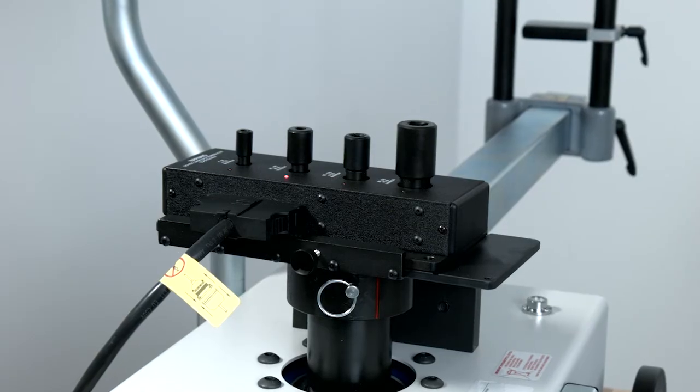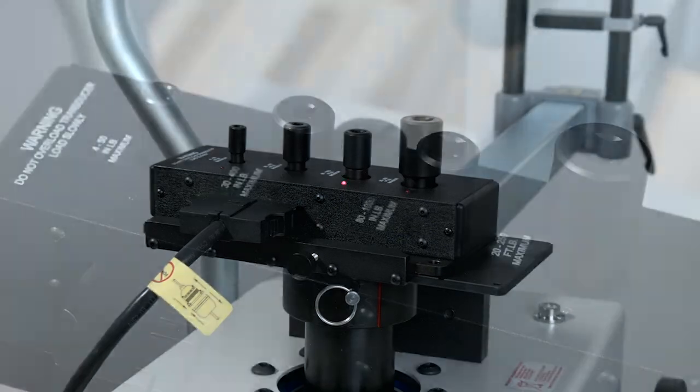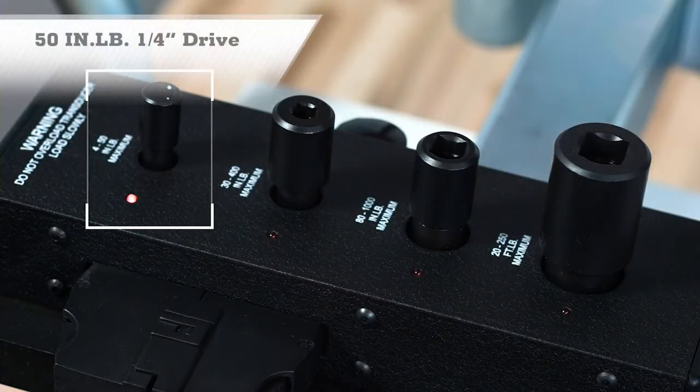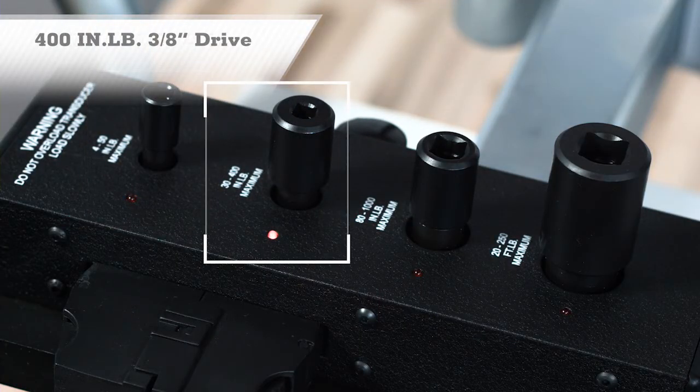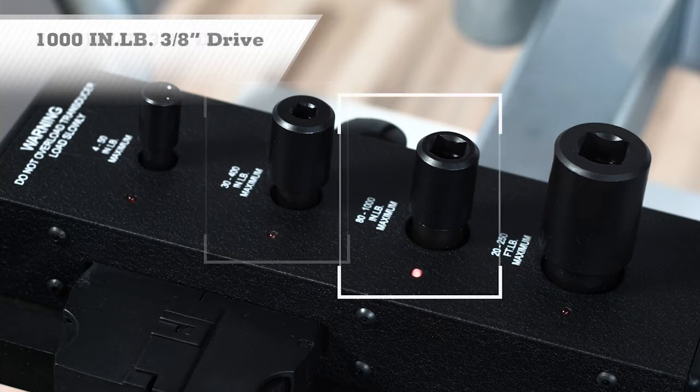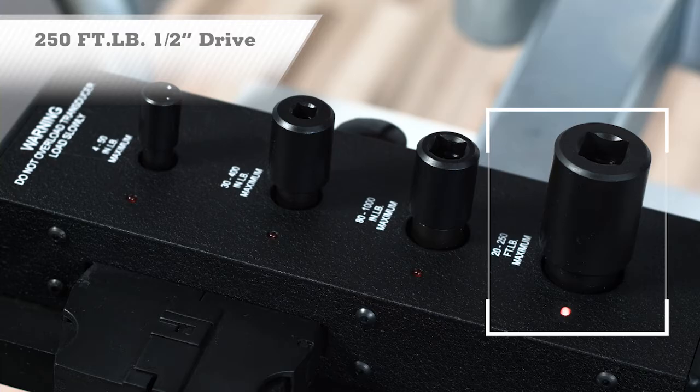The 4-in-1 transducer features four different transducer stems: 50-inch-pound, one-quarter-inch drive; 400-inch-pound, three-eighths drive; 1,000-inch-pound, three-eighths drive; and 250-foot-pound, one-half-inch drive.